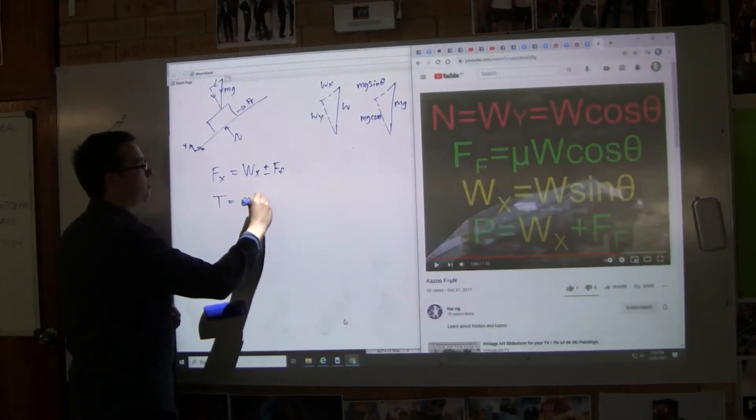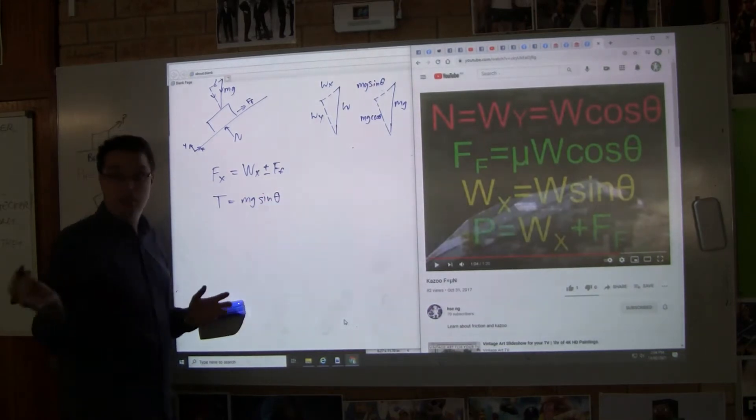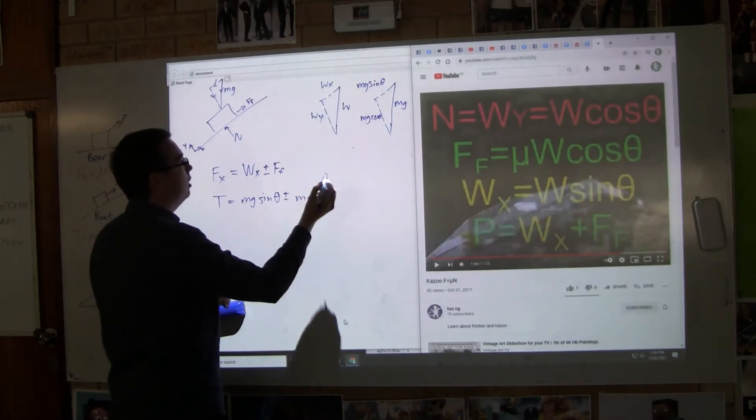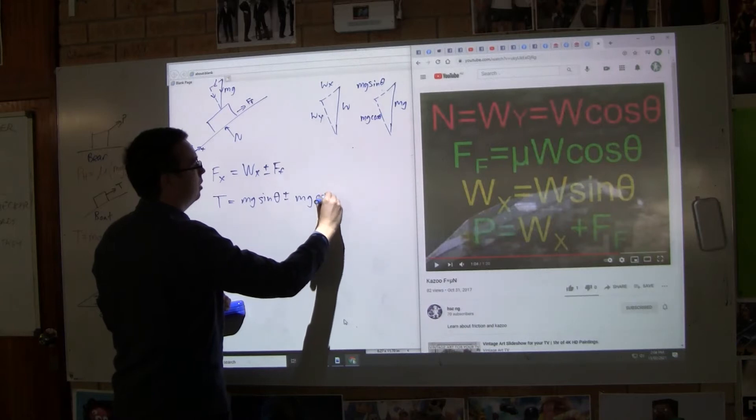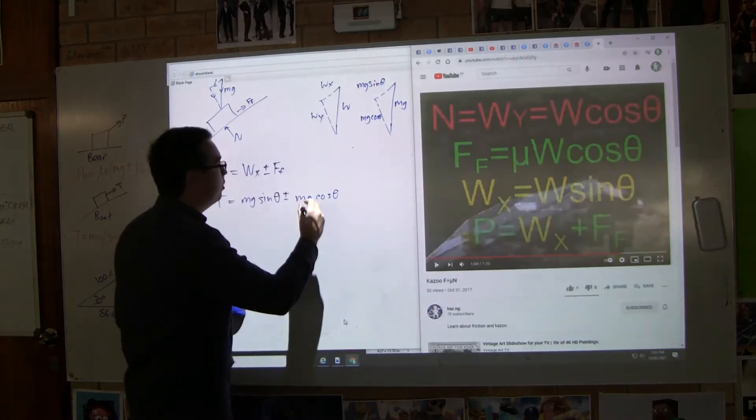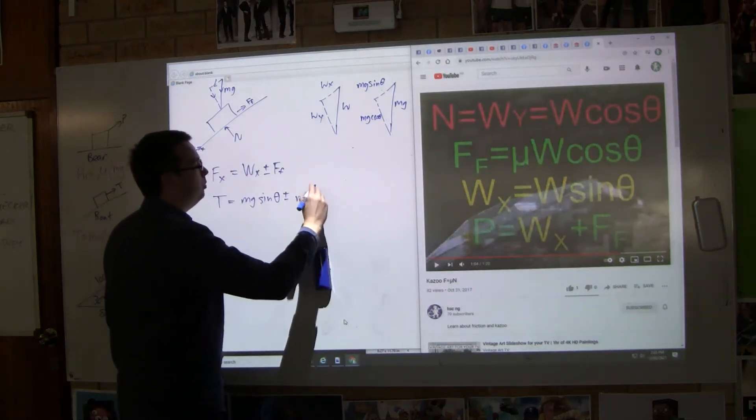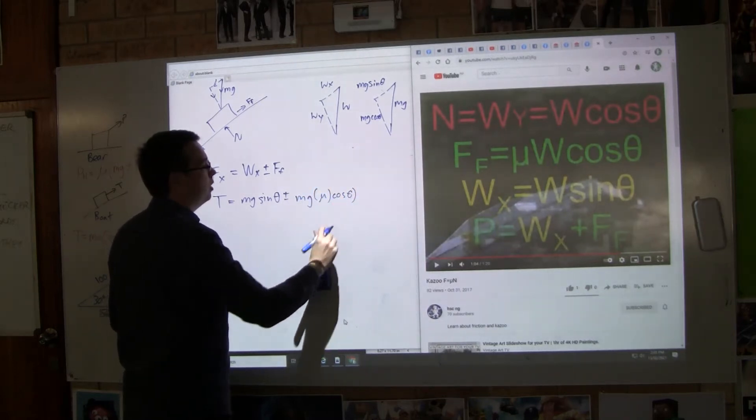So what did we say WX was equal to? Mg sin theta, right? Too many guys. Then we have to do plus or minus mg cos theta. But remember, because friction equals the normal times mu, we have to put a mu in there. So mu mg cos theta.